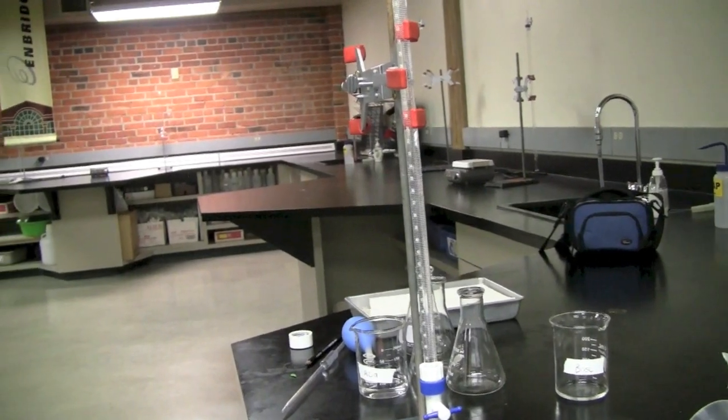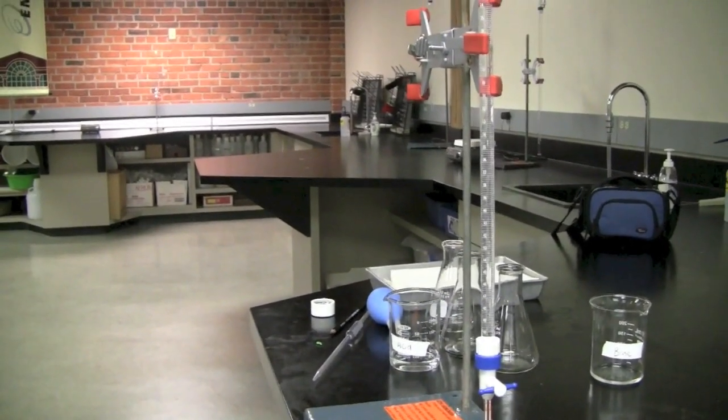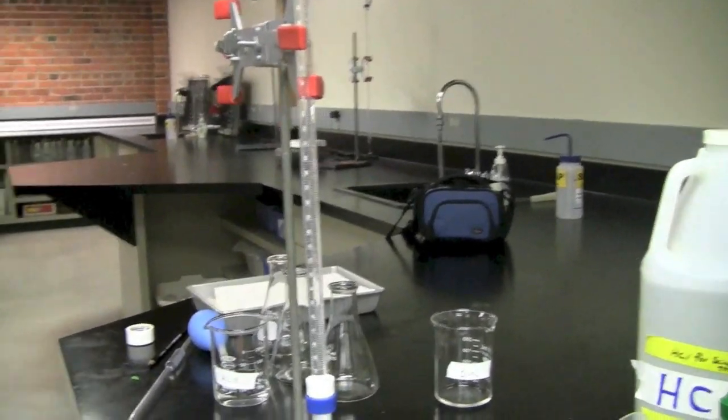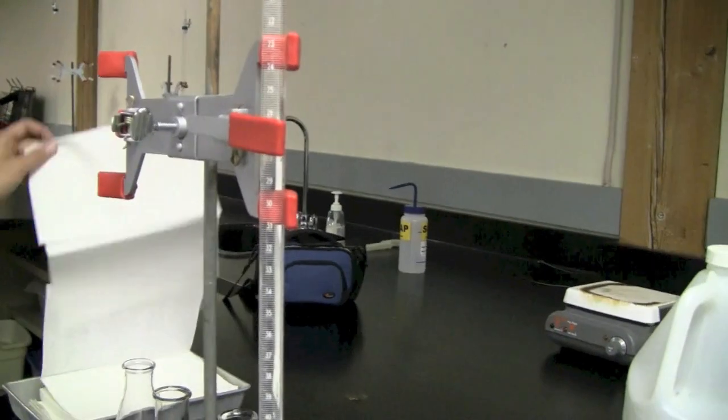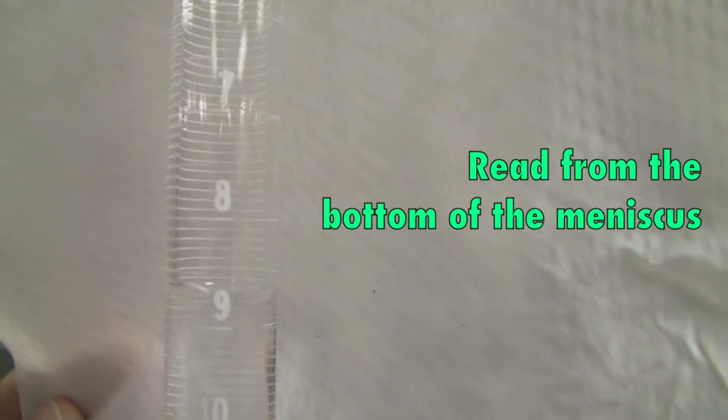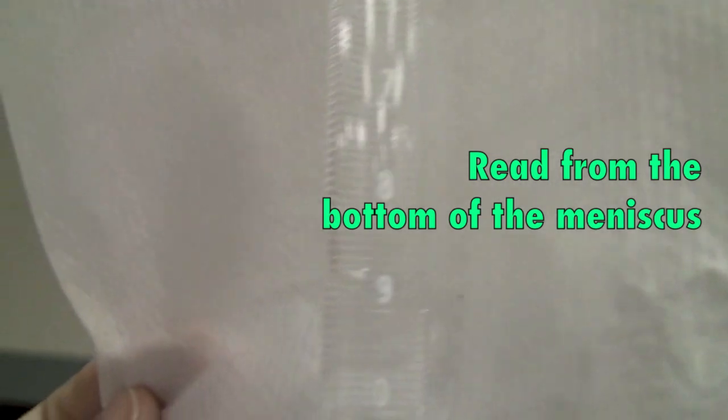So of course, it's very important to read and record the initial volume of the solution. What you're going to do is you're going to grab a paper towel and you're going to put it behind the burette. So remember, you're trying to read from the bottom of the meniscus. Let's take a look out here.